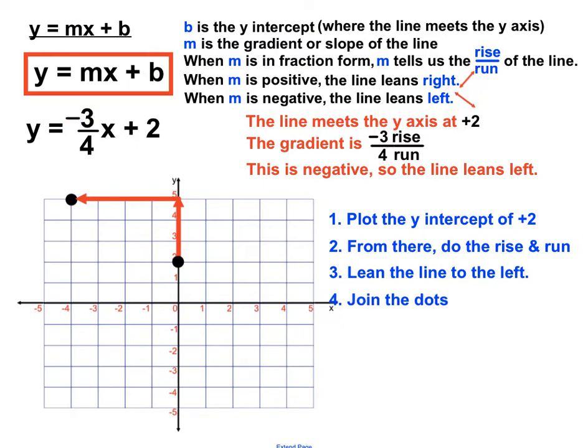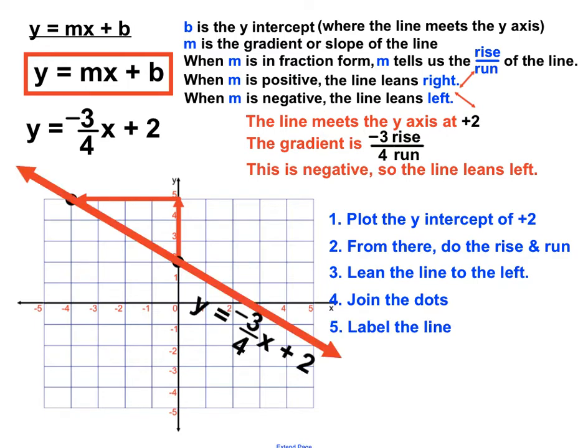But we'll then join the dots to create that final line and label the line. I'll just print in this case the rule for the line on the line there, especially when there's more than one line on a number plane. So the difference is there. The y-intercept wasn't much different. It's just where the line crosses the y-axis.